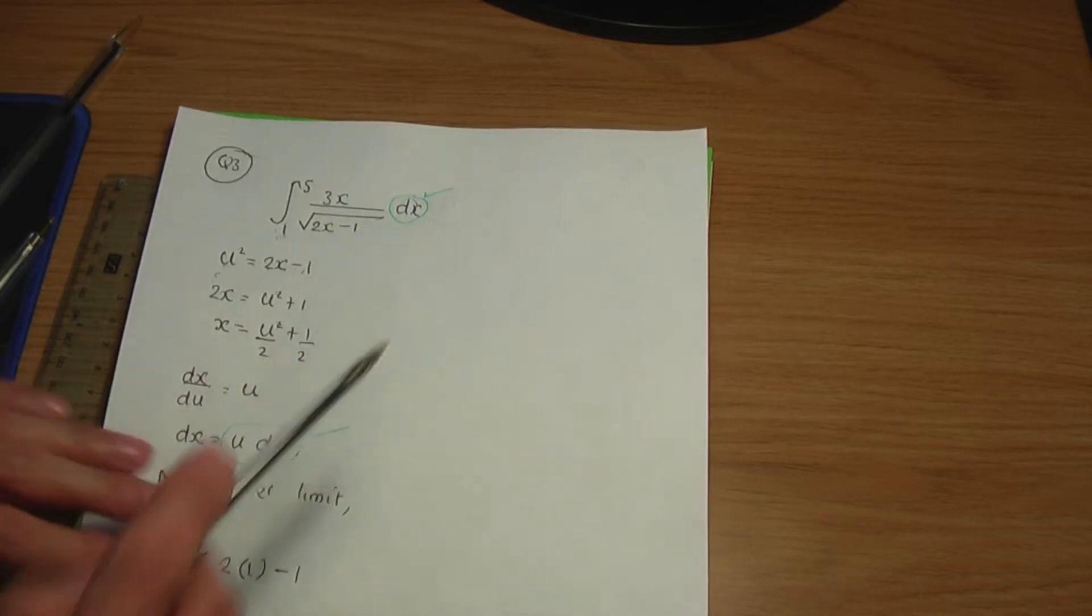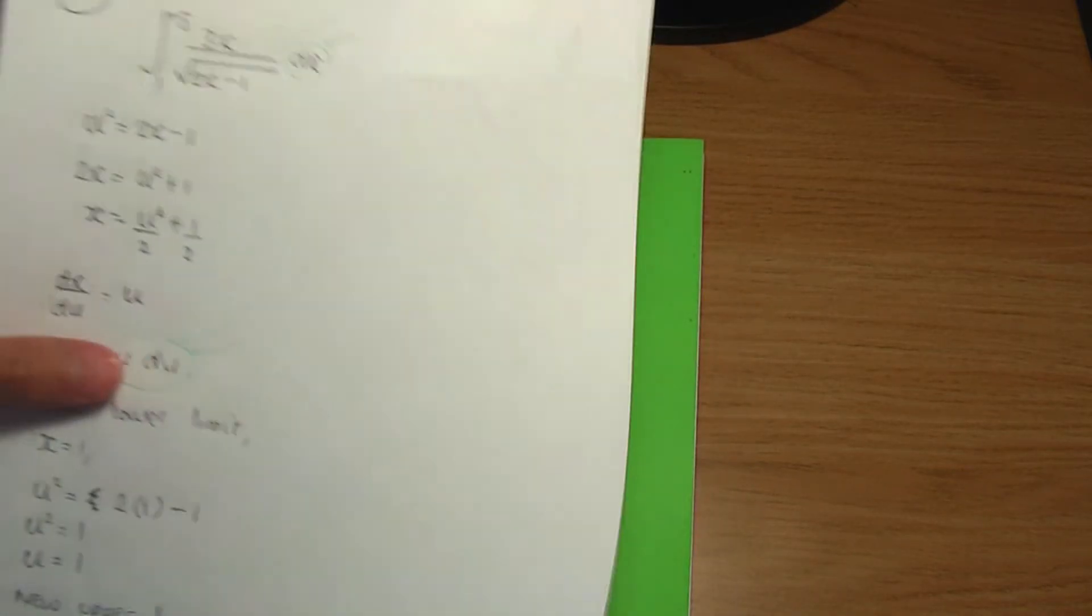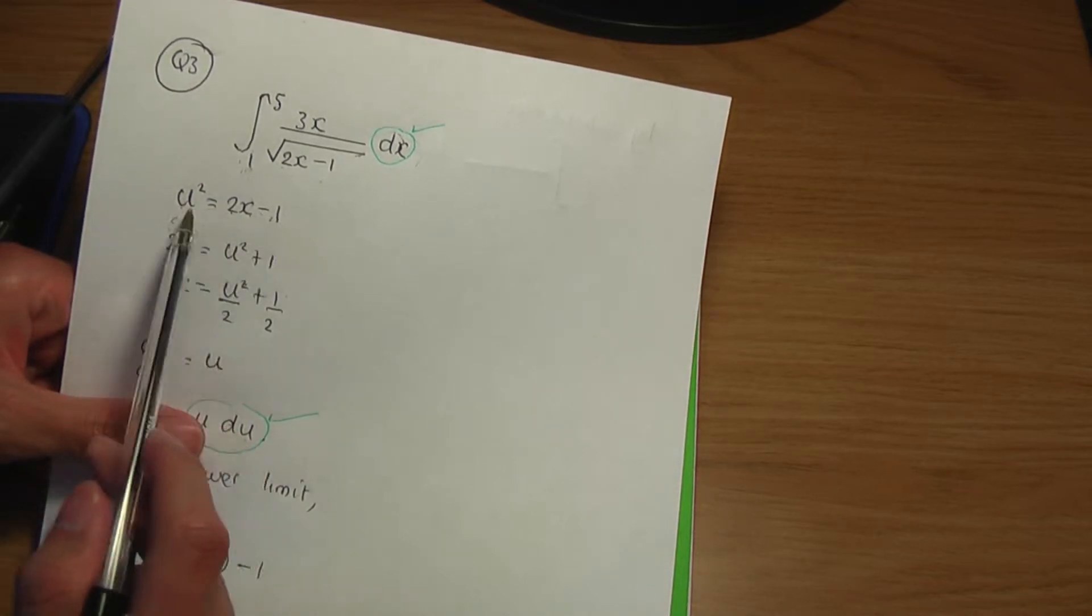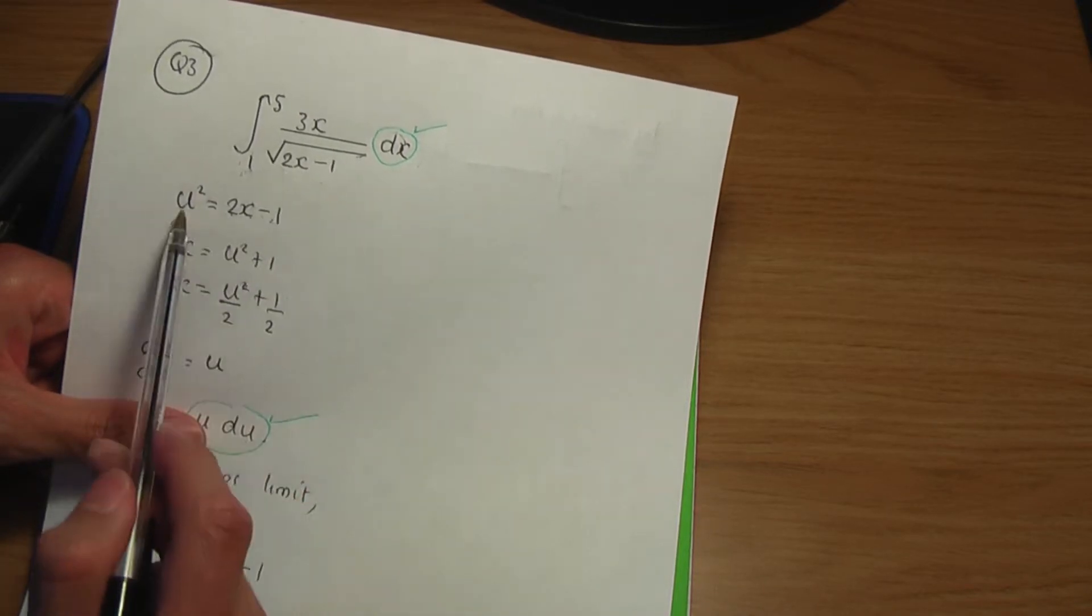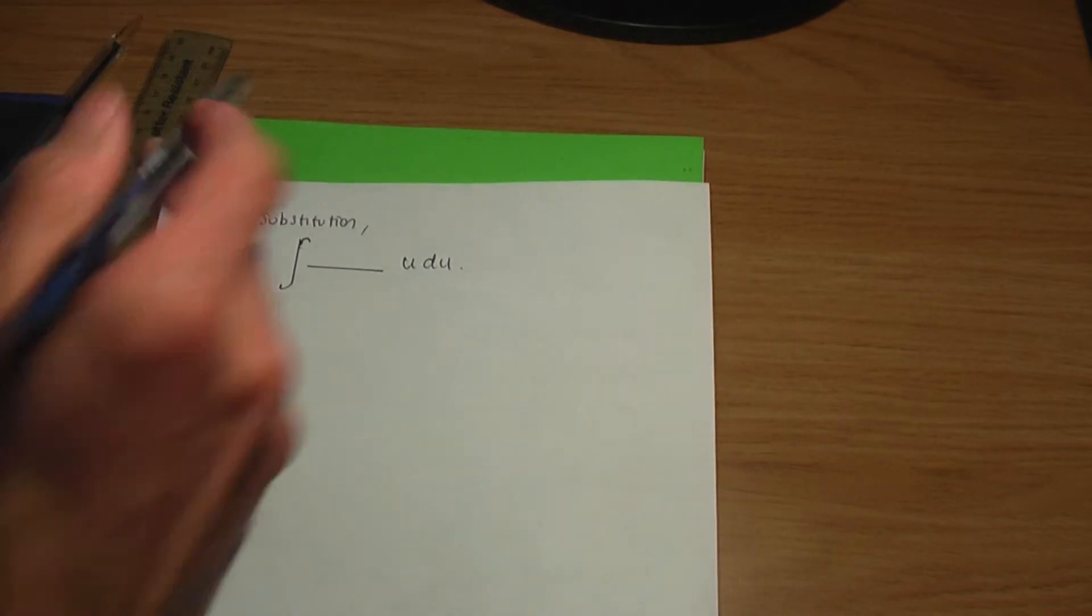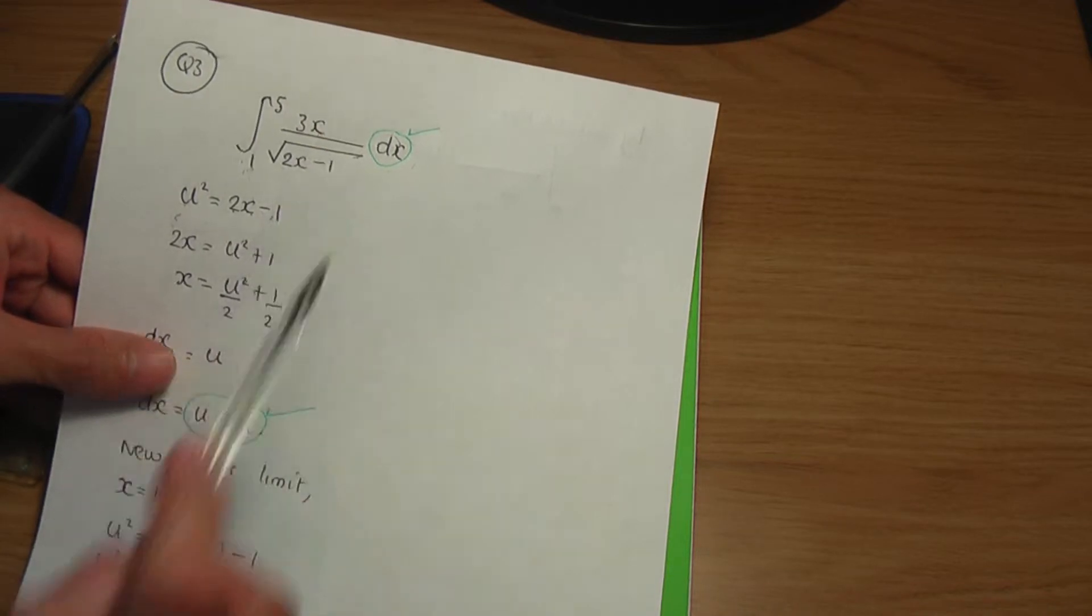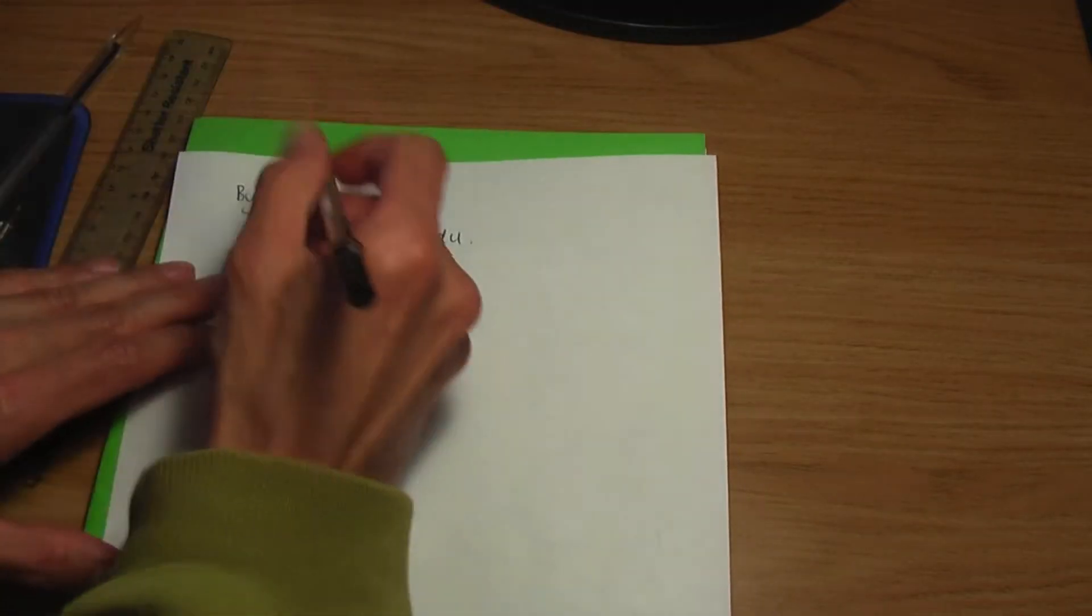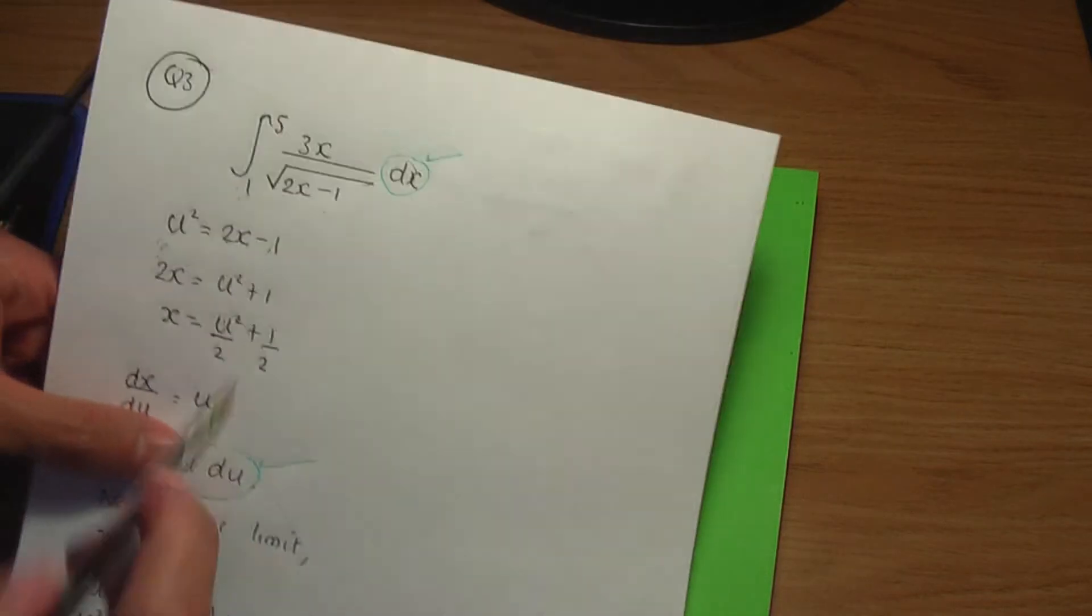And then I have over root of 2x minus 1. If u squared is 2x minus 1, u is the square root of 2x minus 1. So, the square root of 2x minus 1, I can replace that by u. Over the u. And I have 3 into x. x, remember, is u squared over 2 plus 1 half. So, on top, I'll have 3 into u squared over 2 plus 1 half. That is 3x.